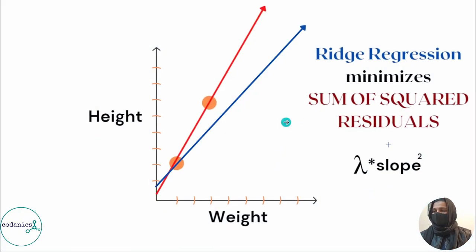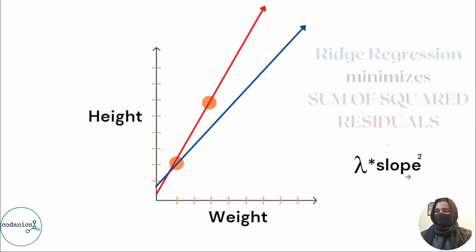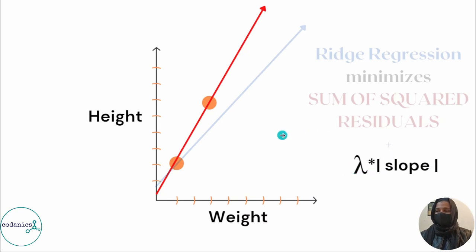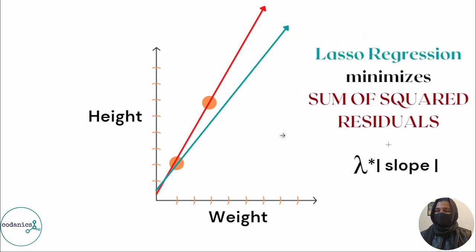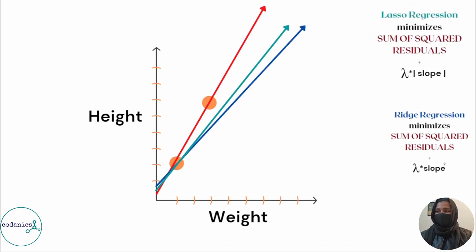Last time with Ridge Regression we had to minimize the sum of square residuals, and this is the Ridge Penalty which is lambda times slope squared. If we have the absolute value of slope instead of slope squared, then it will be Lasso Regression. The difference between Lasso Regression and Ridge Regression is only that Lasso uses the absolute value of slope while Ridge uses slope squared.